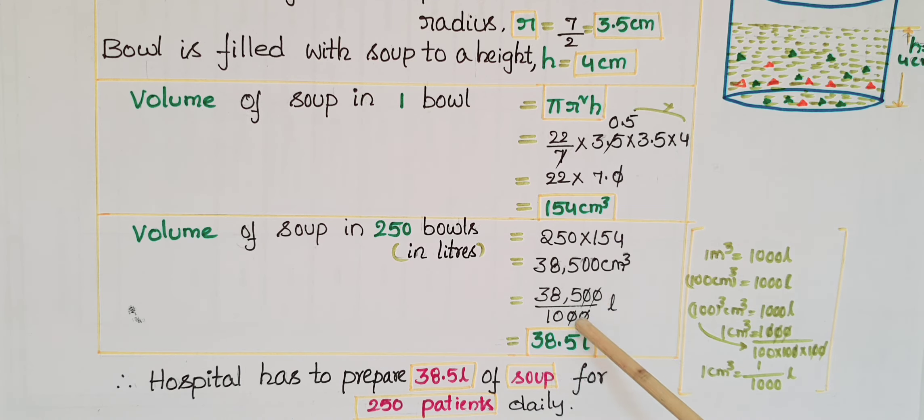So cancel these two zeros here and here, then that 385 by 10 is equal to 38.5 liters. Therefore, hospital has to prepare 38.5 liters of soup for 250 patients daily.